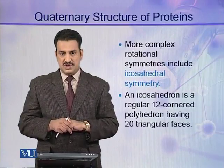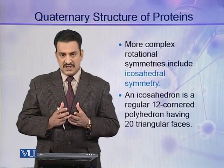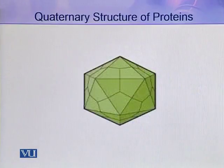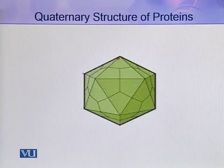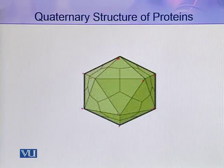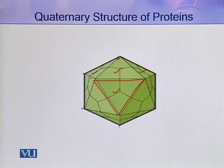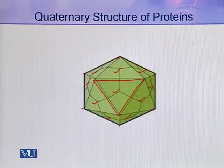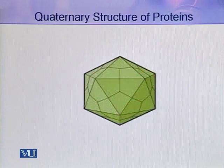In icosahedral symmetry, an icosahedron is formed. An icosahedron is a regular 12-cornered polyhedron with 20 triangular faces. For example, in this icosahedron you can see 12 corners and 20 triangular faces. All these are actually protomers which are arranged in this fashion to make an icosahedron. Such types of symmetries are present in bacteriophages, as seen in the head of a bacteriophage.